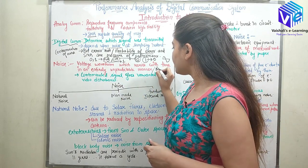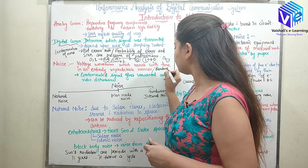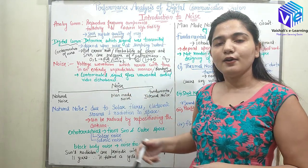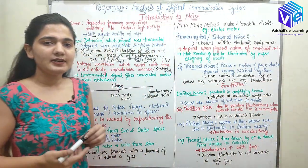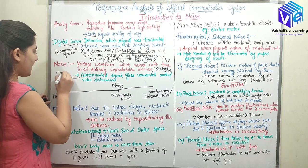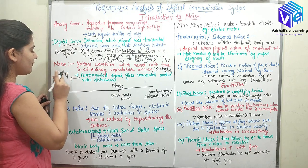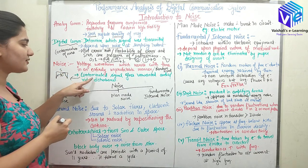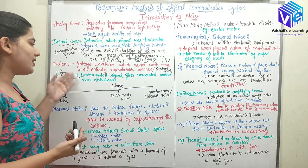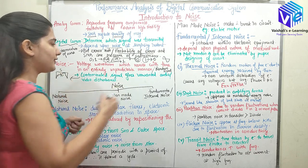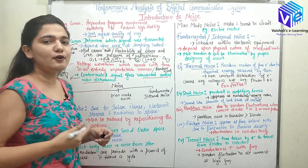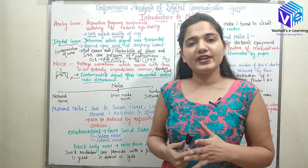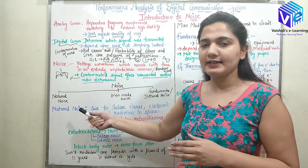Noise is a random signal. Contamination means the signal is added with the noise — when both combine, it is called contamination. When a signal is contaminated, it gives unwanted audio and video or picture disturbances. Noise can be classified into three categories: natural noise, man-made noise, and fundamental or internal noise.